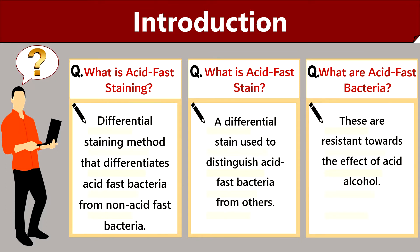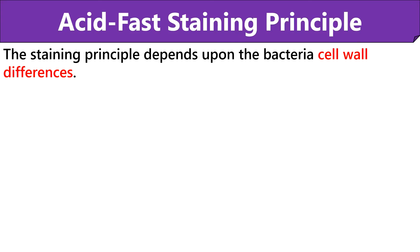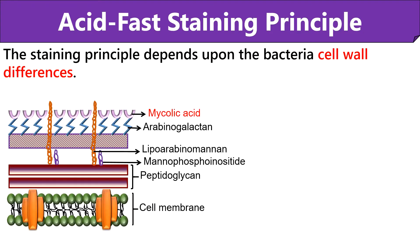Acid fast bacteria exhibit acid fastness, which is a physical property that gives resistance to the bacteria against the effect of acid alcohol. This resistance is due to the presence of mycolic acid in the cell wall of acid fast bacteria. The principle of acid fast staining depends upon the cell wall differences between acid fast and non-acid fast bacteria. The cell wall of acid fast bacteria contains a high content of mycolic acid in the form of long fatty acids.